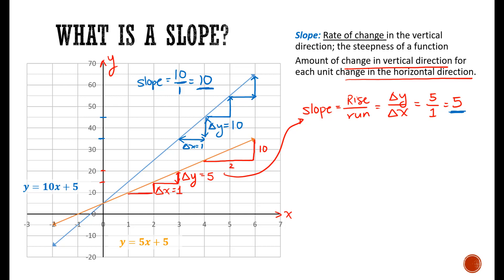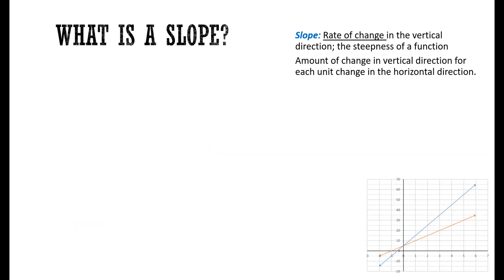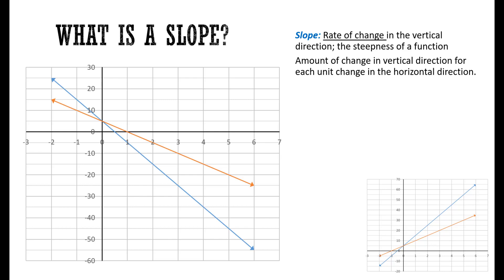Now let's compare this to a different type of function. The function we just examined is here in the bottom right corner — those two lines. What if the lines look like this instead? For the orange line here, x is going up by 1 unit. This time, y is going down — from negative 10 to negative 15, it's going down by 5. We give that a negative sign to indicate it's going downward. So the slope is going to be equal to negative 5 over 1, which is negative 5.